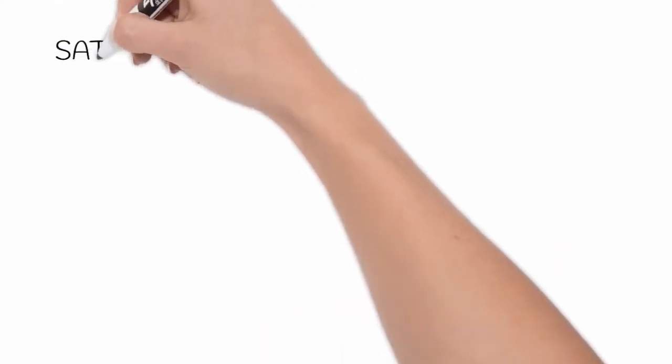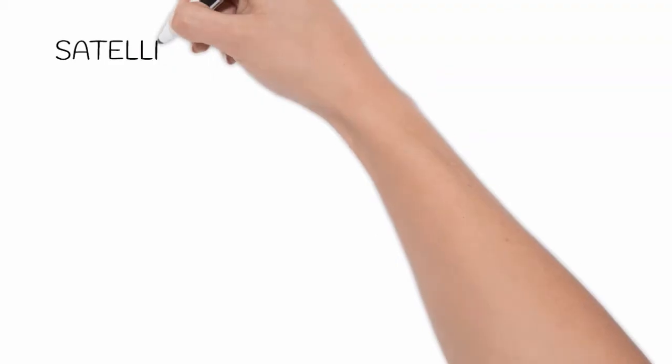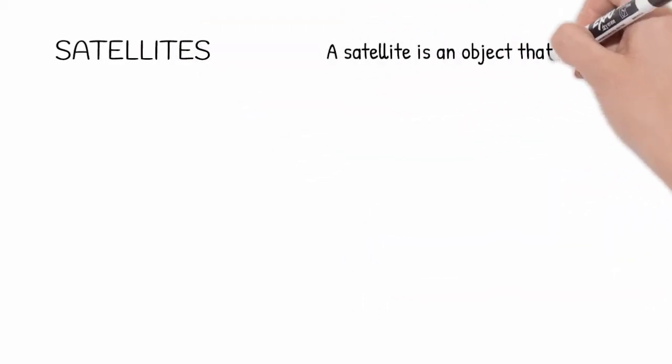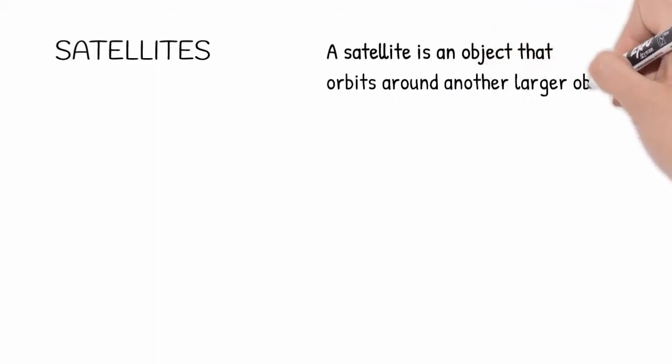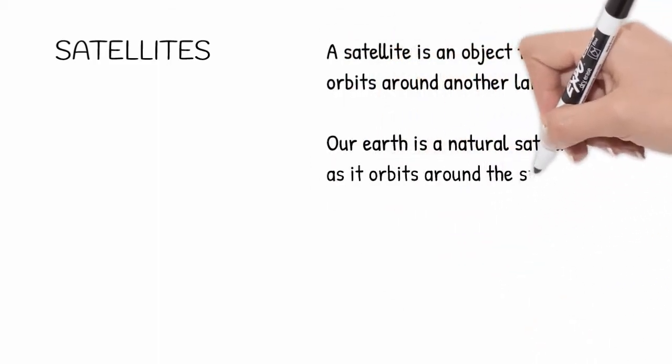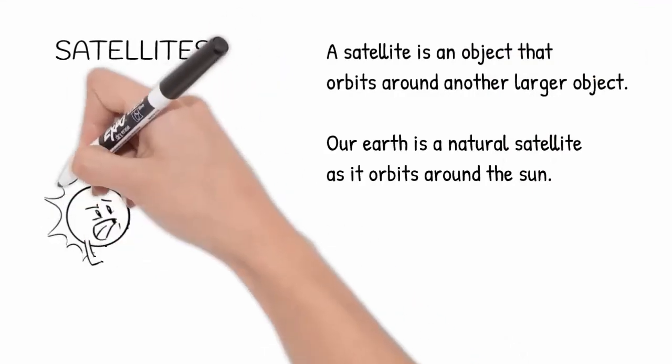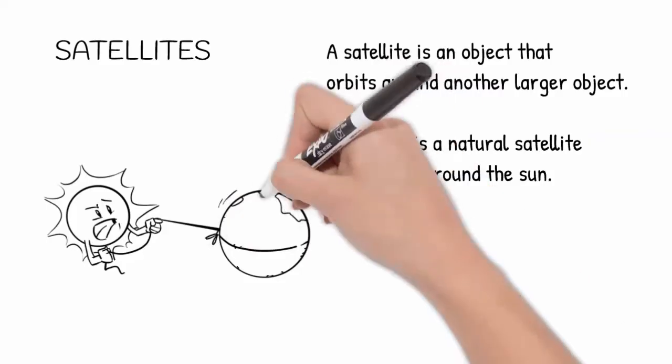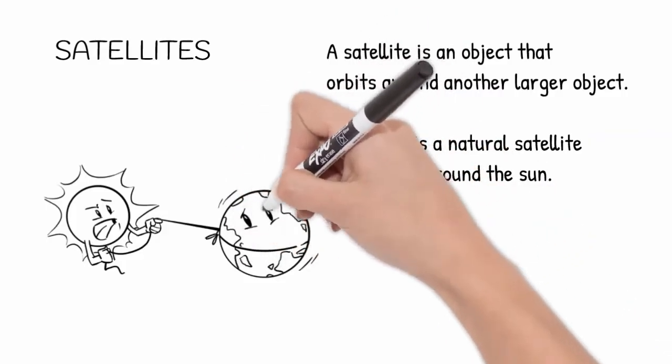Satellites are the other piece of technology that have really advanced our understanding of the solar system. A satellite is an object that orbits around a larger object. There are natural satellites - anything that naturally orbits something else. For example, our Earth is a natural satellite because it orbits the sun, and likewise our moon is a satellite of Earth.